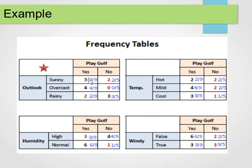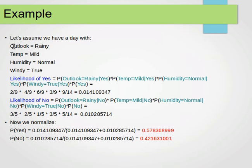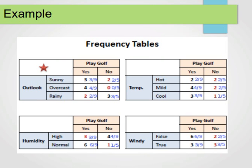Let's take a full example. Say we have a day with outlook rainy, temperature mild, humidity normal, and windy true, and we want to decide whether to play using the Naive Bayes classifier. We compute the likelihood of yes: probability of outlook equals rainy given yes, times probability of temperature mild given yes, times probability of humidity normal given yes, times probability of windy true given yes, times probability of yes. For example, probability of outlook rainy given yes is 2 over 9, and probability of temperature mild given yes is 4 over 9. We multiply these together with probability of yes (9 over 14) to get the likelihood of yes.